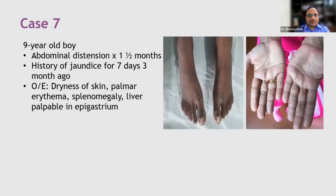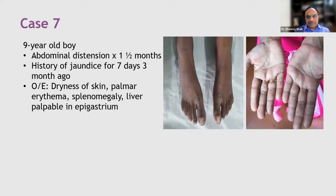This is a nine-year-old boy who is having abdominal distension for one and a half months along with history of jaundice. Three months ago the child had jaundice for seven days — that is the only past history of jaundice. Presently there is no jaundice, and on examination this child has dry skin, the palms are erythematous as apparent in this picture, and the abdomen is distended.